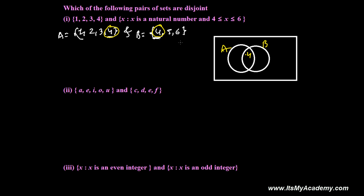Then for A intersection B, 4 is here because 4 is here also and 4 is here also, and in A you will be left with 1, 2, 3 and in B you will be left with 5 and 6. So this is intersecting set, not disjoint.